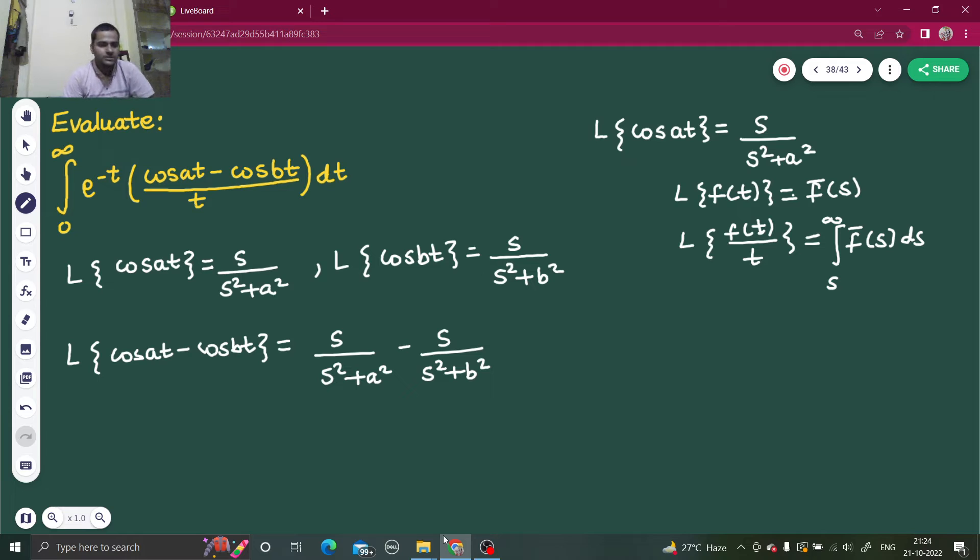Fine, so this will be Laplace of cos at minus cos bt divided by t will be nothing but integral from s to infinity s divided by s square plus a square minus s divided by s square plus b square with respect to s.